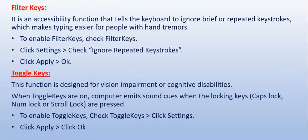The next option in the Keyboard tab is Filter Keys. Filter Keys is a feature of Microsoft Windows — an accessibility function that tells the keyboard to ignore brief or repetitive keystrokes, making typing easier for people with hand tremors. To enable Filter Keys, check 'Use Filter Keys', then click Settings under Filter Keys and check 'Ignore repeated keystrokes', then click Apply and OK.